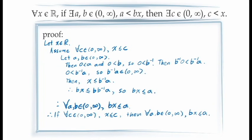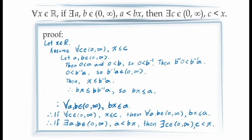Writing this conditional statement in its contrapositive form gives us the conditional statement that we're trying to prove. Finally, since x was arbitrary, this holds for all values of x in the real numbers.